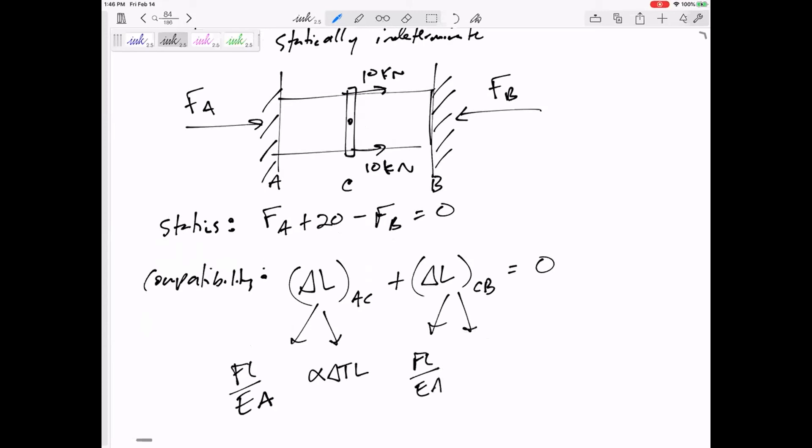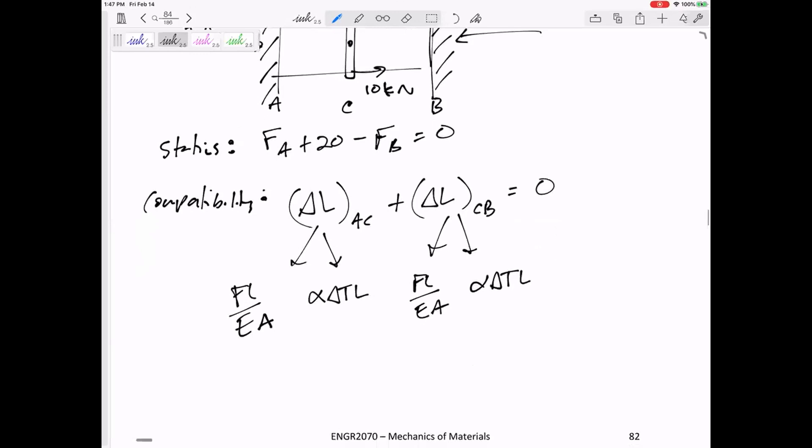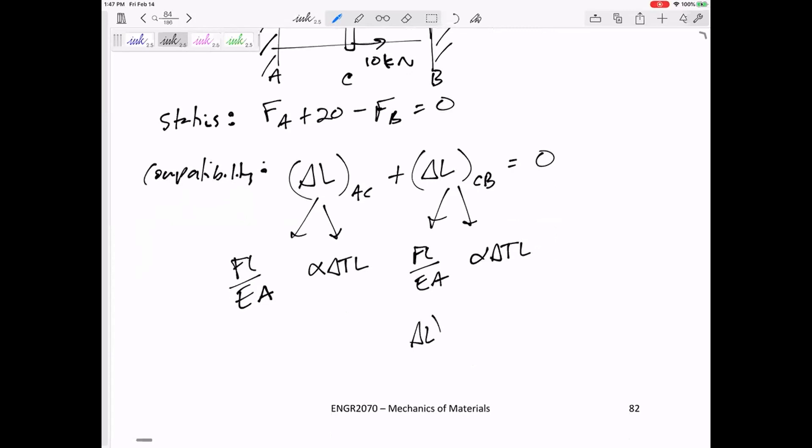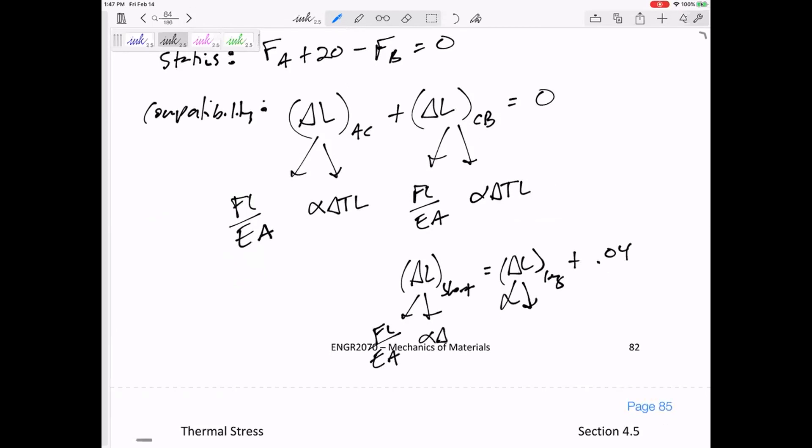It's not completely new. Now we're just having the alpha delta TL and FL over EA. If we did that glass board problem with a temperature change, so maybe originally they were at 60 inches and 60.04, and we put that weight down and the temperature rose, it might look something like this: the FL of the short equals FL of the long plus .04. We would just have two things for each of these: the FL over EA and the alpha delta TL.